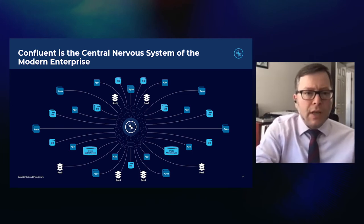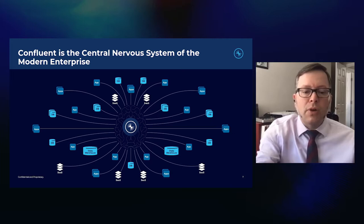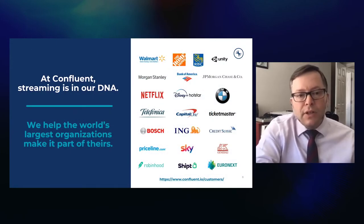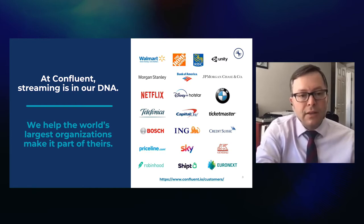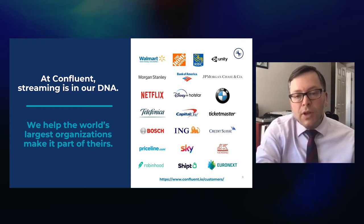A way we see people doing that is using Confluent as a central nervous system for the modern enterprise — really more for information than for data, organizing that data into something more useful as actual information. At Confluent, streaming is in our DNA. This is a company that was started by the people who founded Apache Kafka back at LinkedIn. We help the world's largest organizations make streaming a part of their DNA as well, with companies on this list that almost everyone will know.